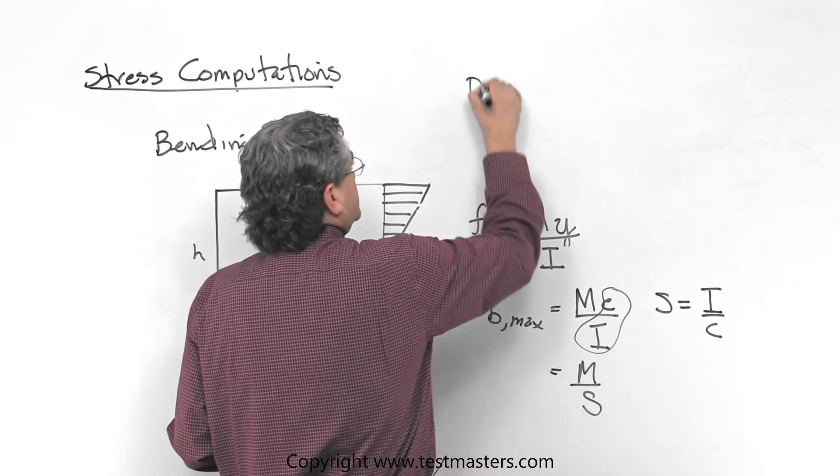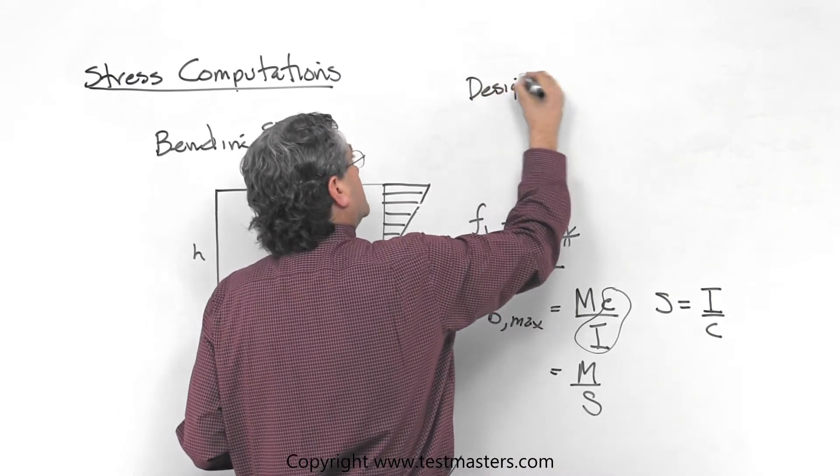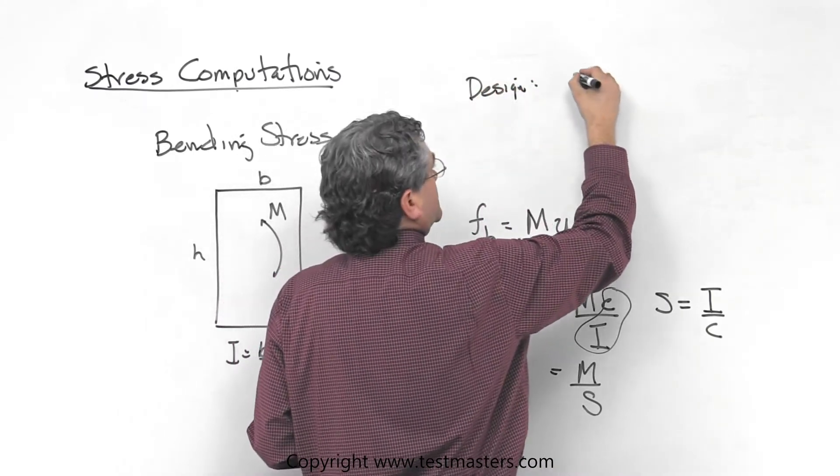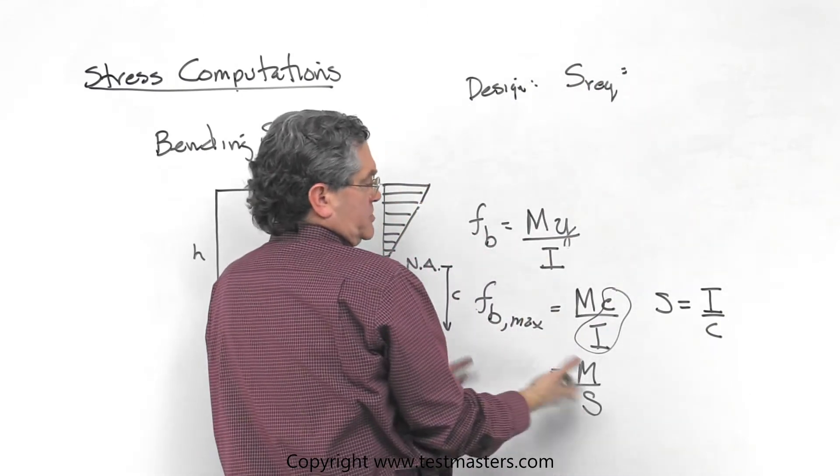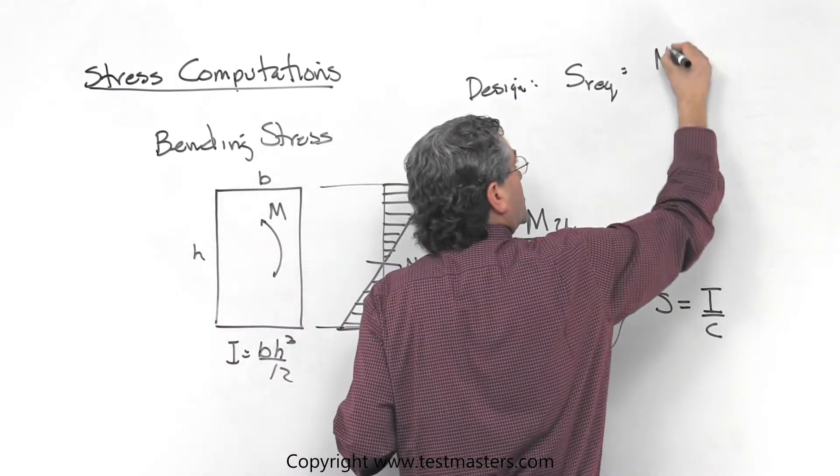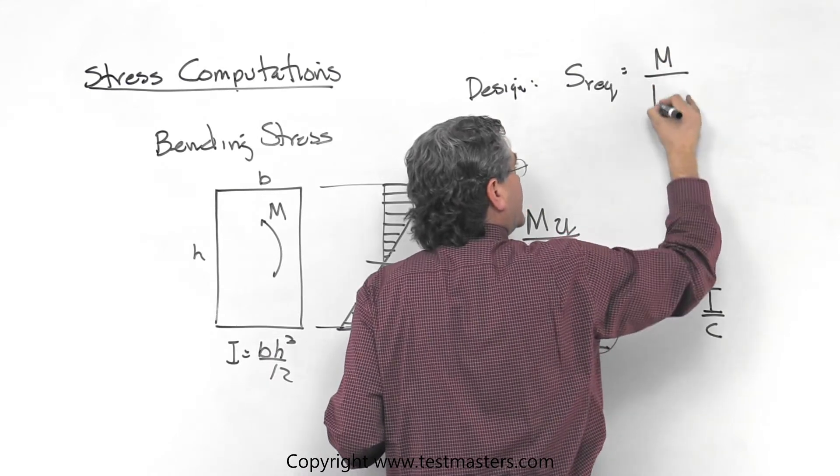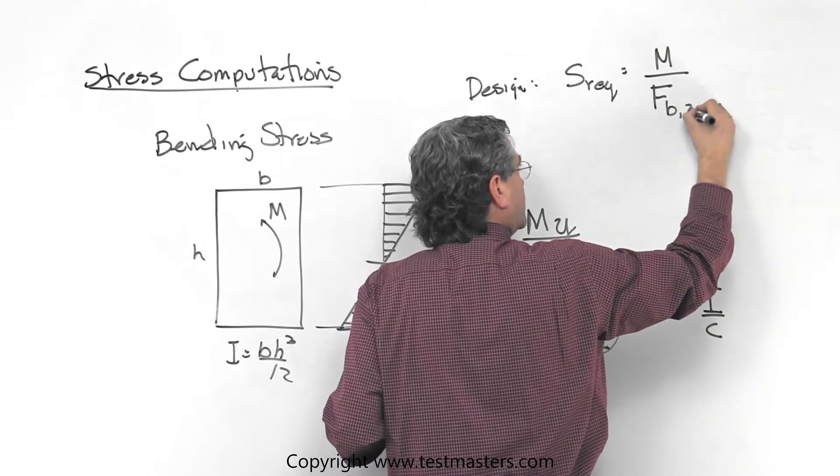Therefore in design, what you have is you're finding a required section modulus, and all you do is rearrange it and take your moment and divide through by your allowable bending stress.